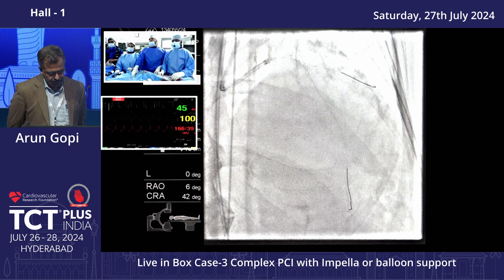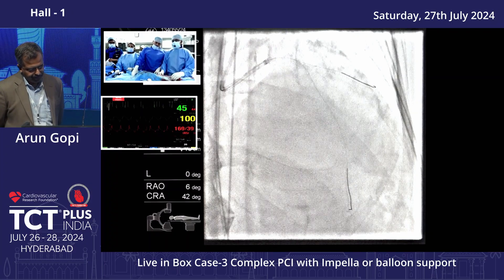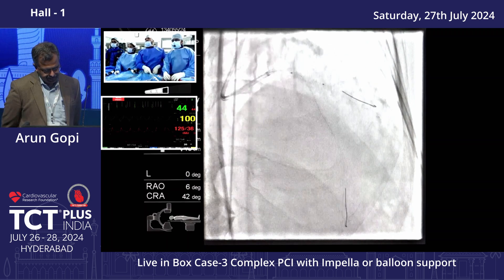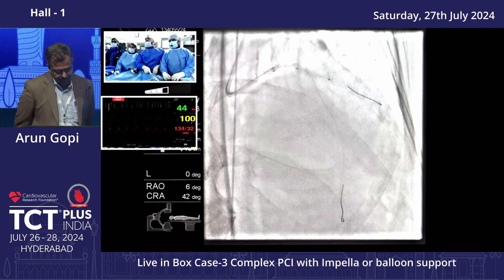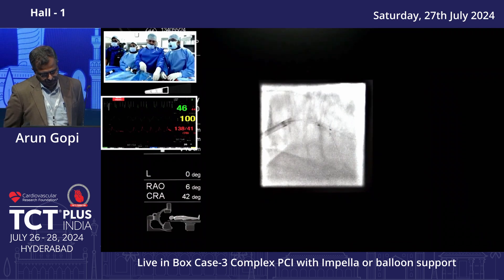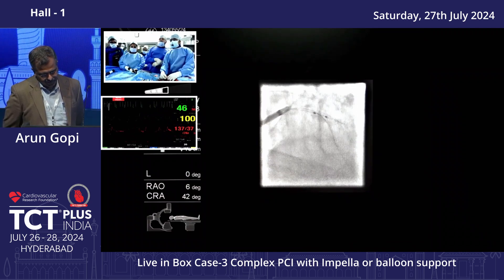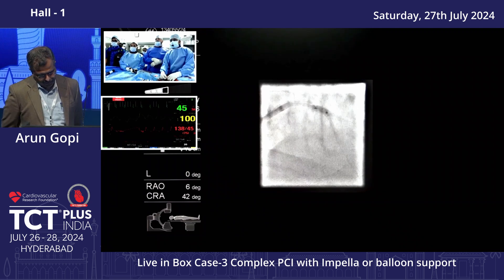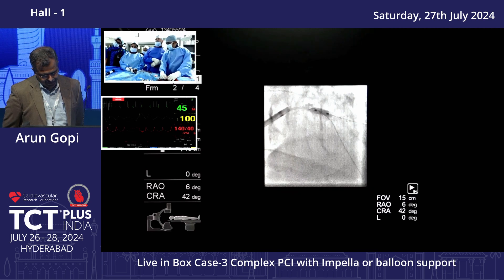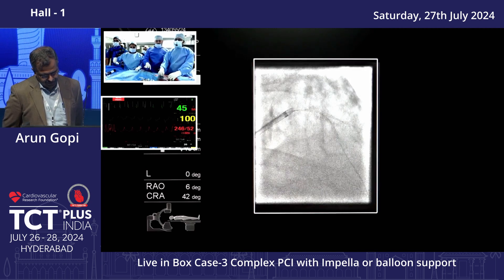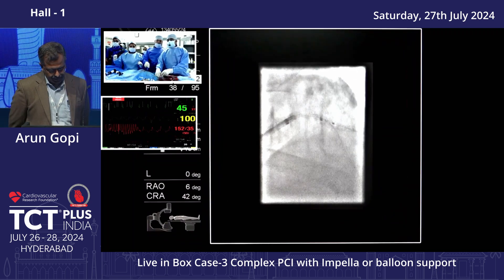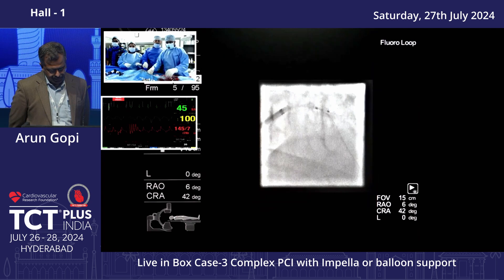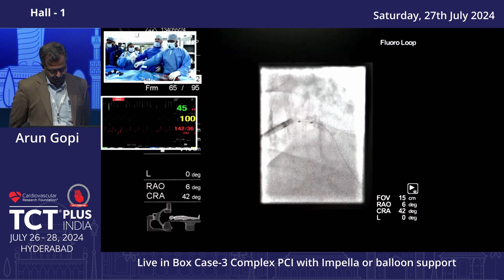Our strategy is to first stent from LAD to diagonal, then through the struts of that stent, place a second stent from proximal LAD to mid-LAD. We deployed a 3 x 18 Xience Xpedition from LAD to diagonal, keeping at least 8 mm in the LAD for a POT. The stent opens up adequately. We then do a POT with a 3.5 balloon — matching the proximal reference per OCT — on the stent in the LAD segment before rewiring the main LAD. This POT ensures we do not go abluminal proximally when rewiring, staying proximal to the carina and not crossing into the mid-LAD.